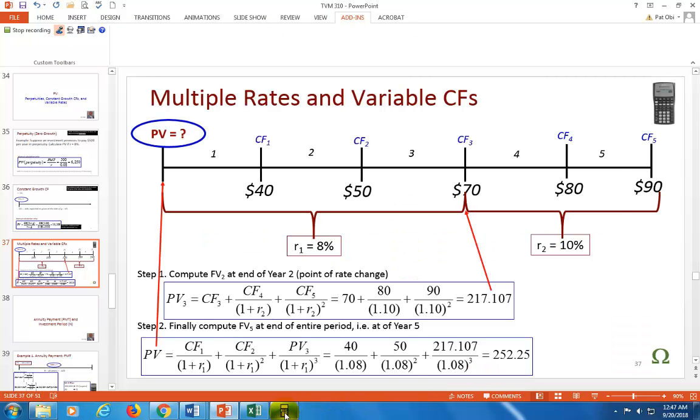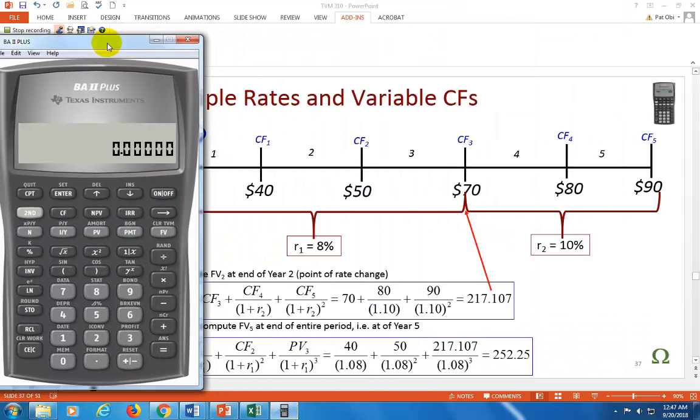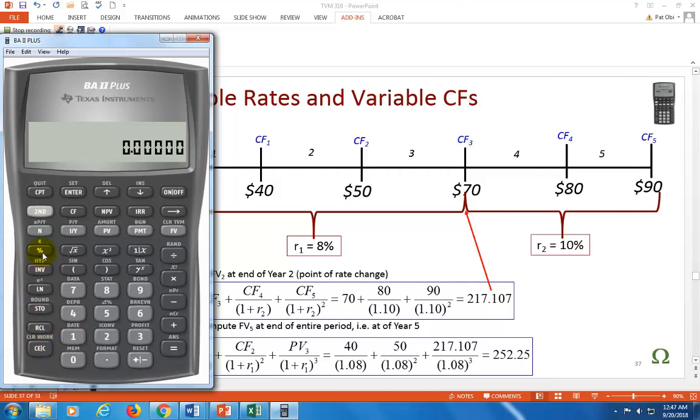By the way, we can also use the calculator to do this. So I'm going to clear, second, clear TVM, second, clear work. However, because these are different cash flows, I'm going to use the cash flow register right here. Click it, and then second, clear work. So again, remember, we're going to stay right here and calculate the present value of these ones at 10%. So my CF sub zero right here is going to be this 70. So type in 70 and enter.